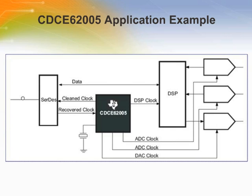The clock distribution block includes five individually programmable outputs that can be configured to provide different combinations of output formats. Each output can also be programmed to a unique output frequency and skew relationship via a programmable delay block. If all outputs are configured in single-ended mode, the CDCE62005 supports up to ten outputs. In the example as shown, the CDCE62005 provides four clock sources for DSP, two A-to-D converters, and one A-to-D converter.